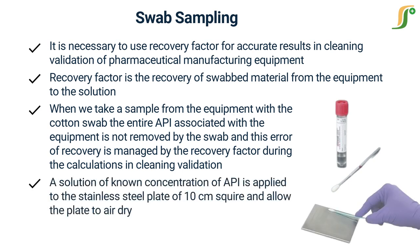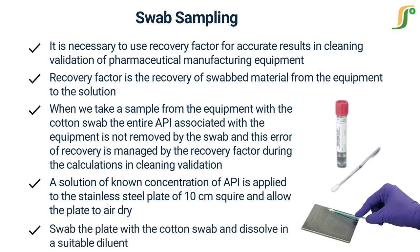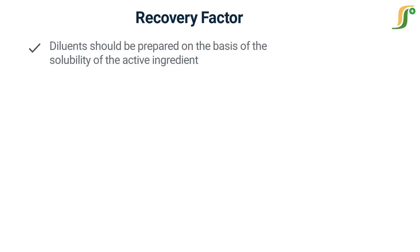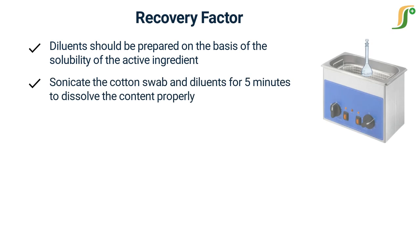A solution of known concentration of API is applied to the stainless steel plate of 10 centimeters square and the plate is allowed to air dry. Swab the plate with the cotton swab and dissolve in a suitable diluent. The diluent should be prepared on the basis of the solubility of the active ingredient. Sonicate the cotton swab and diluent for 5 minutes to dissolve the content properly.